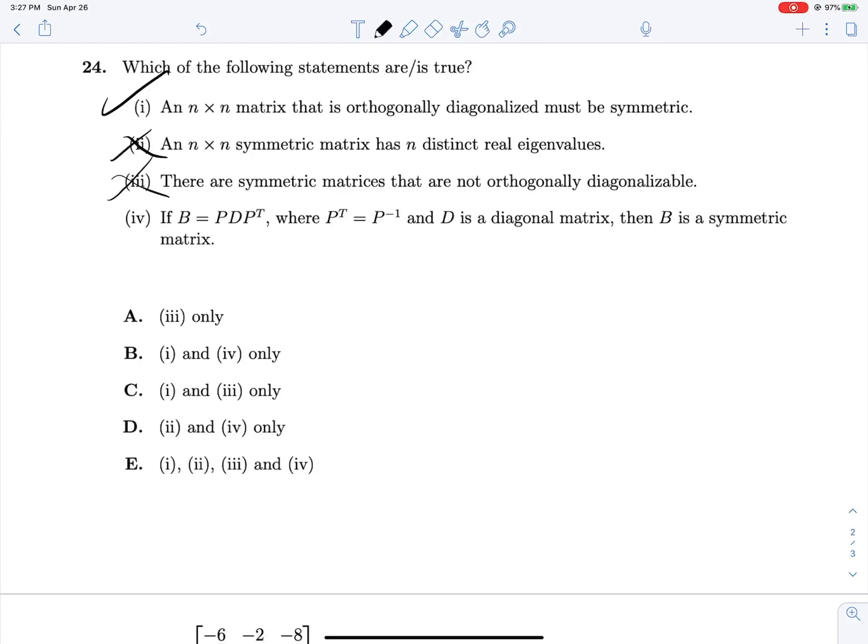And then 4. If B is orthogonalized to PDP transpose where P transpose is equal to P inverse and D is the diagonal matrix, then B is a symmetric matrix. And, yep, and this kind of acts to explain a little bit of what's going on behind the scenes in 1. So the spectral theorem isn't just guaranteeing that every symmetric matrix is orthogonally diagonalizable. It's really meaning that any matrix B that can be put into this form right here, and we know that this P matrix must be orthogonal because that's a property of orthogonal matrices right there. It guarantees that any matrix put into this form must be symmetric. So 4, 4 is true, and 1 and 4B is our answer.